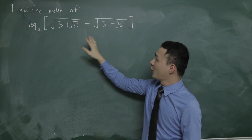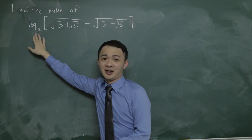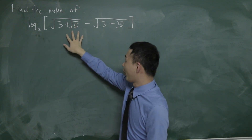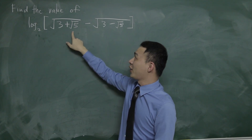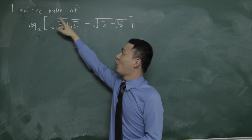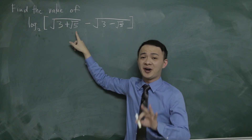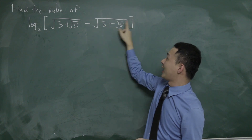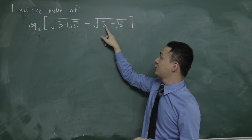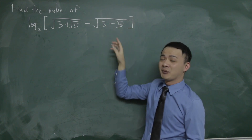Normally when we see a question like this, we have a log and we have a square root. Inside the square root, we have a square root again. The whole expression is: square root of (√(3+√5) minus √(3−√5)).